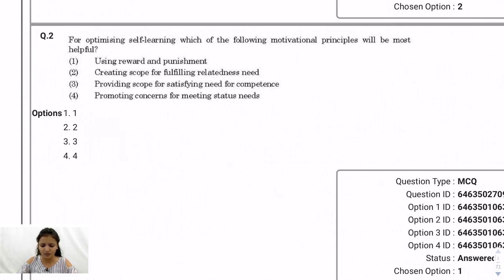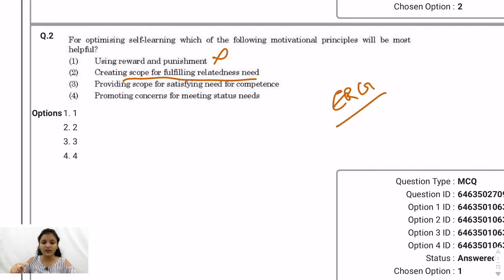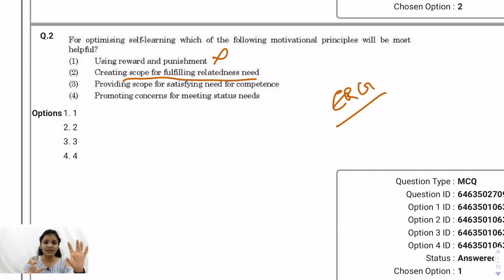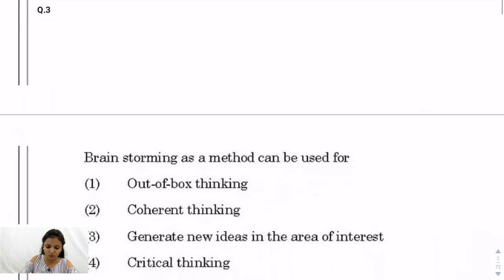Question 2: For optimizing self-learning, which motivational principle is most helpful? Using reward and punishment won't work because punishing oneself for not self-learning is not an option. Creating scope for fulfilling relatedness need — from ERG theory or Maslow's theory — means we move from basic needs to relatedness, connecting ourselves to our social environment. This helps in self-learning. Satisfying need for competence relates to growth, the last aspect in ERG theory. So the answer is option 2: creating scope for fulfilling relatedness need.